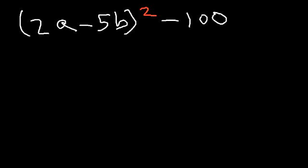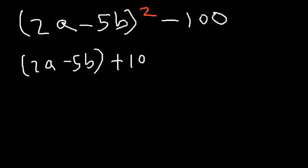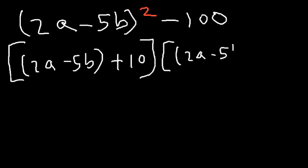We can now apply the difference of squares method. Taking the square root of (2a − 5b)² is (2a − 5b), and the square root of 100 is 10. So the final answer is (2a − 5b + 10)(2a − 5b − 10). That's how we factor this expression.